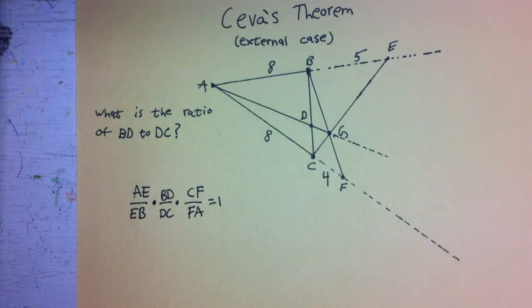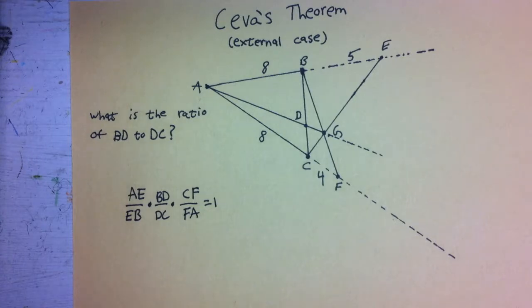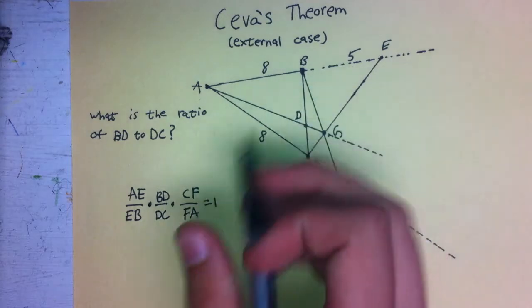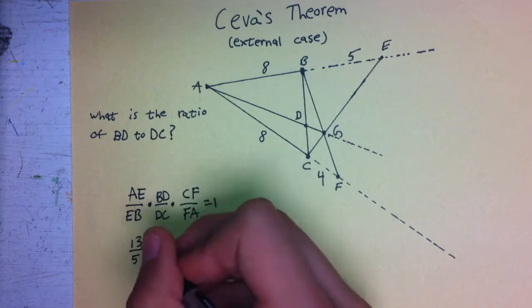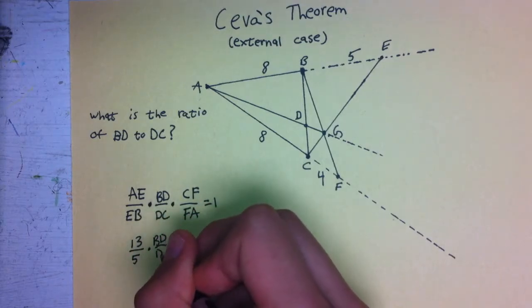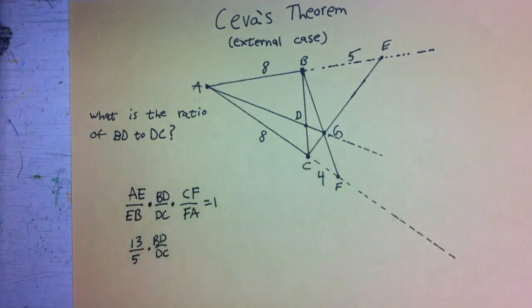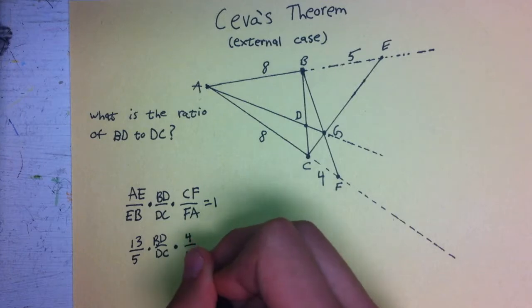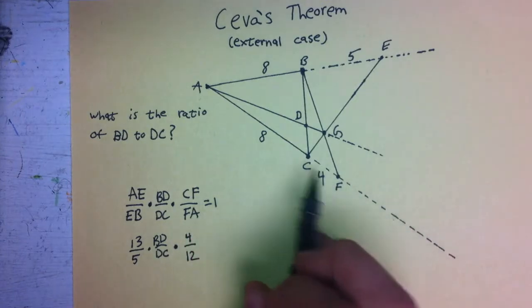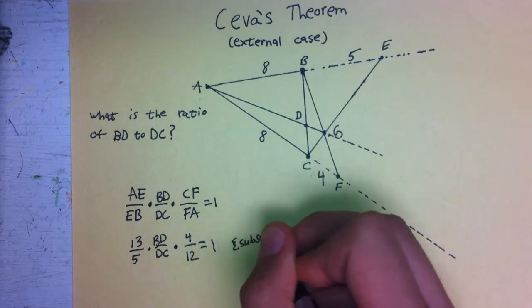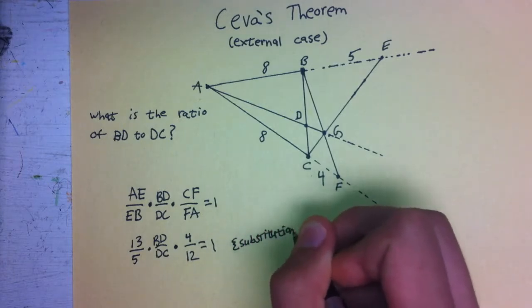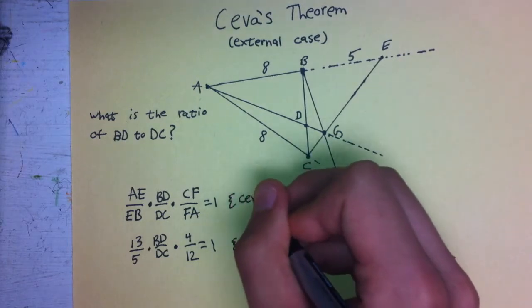So we're now going to begin substituting in things that we know. We know AE is 13, because 8 plus 5 is 13, divided by 5, because EB is 5, times BD divided by DC. We're going to leave that alone because that's what we're trying to find. And we're going to multiply that by 4 over 12, which is CF over FA, and that's all equal to 1. This is by substitution. And our original step was by Ceva's theorem.